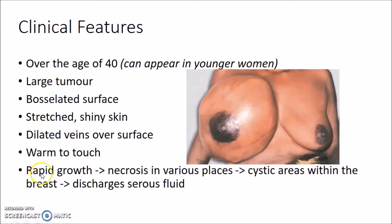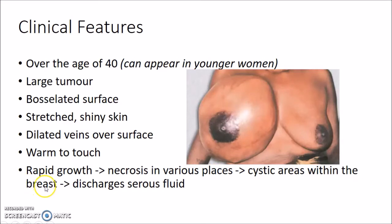Phyllodes Tumor shows rapid growth. Since it grows rapidly, there will be necrosis in various places. This causes cystic areas within the breast and there will be serous fluid discharge.